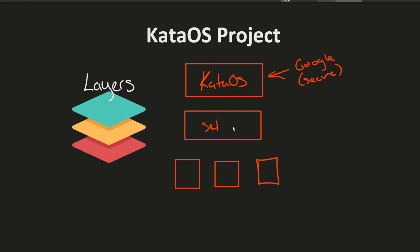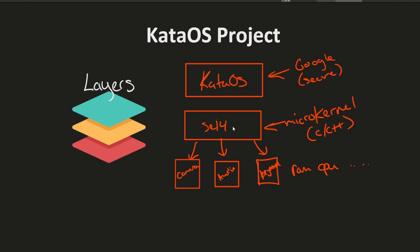seL4 is a microkernel that's already been developed, based on C and C++. It offers a really tiny kernel that can talk to various types of hardware — for example, cameras, audio devices, peripherals like keyboards, RAM, CPU, etc. So basically Kata OS is built on top of this seL4 microkernel and acts as the operating system for these embedded IoT devices that run specific machine learning algorithms. What's very interesting is that the software running at that level will be the ML software.